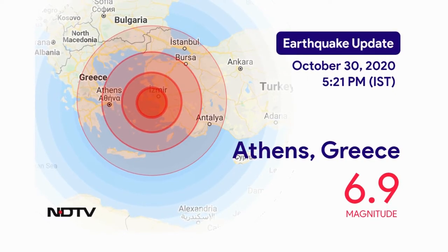This earthquake with a moment magnitude of 6.9 occurred on the 30th of October 2020, about 14 km northeast of the Greek island of Samos. It occurred as the result of normal faulting and a shallow crustal depth within the Aegean plate in the Eastern Aegean Sea.